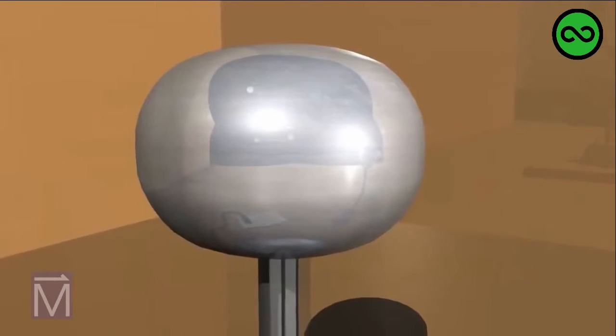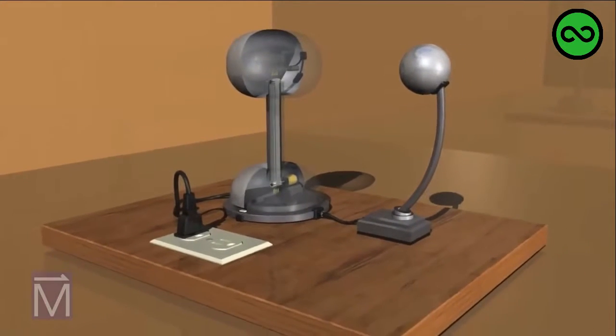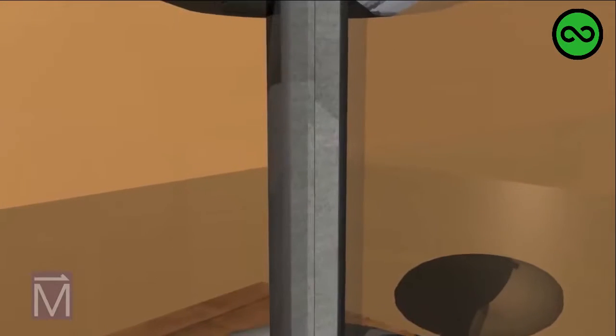Although all Van de Graaff generators have these parts, they're not all made of the same materials and may work a little differently, but they all exploit the relative tendency of materials to lose or hold onto negatively charged electrons. In our generator, the belt is made of cotton, a relatively neutral material.